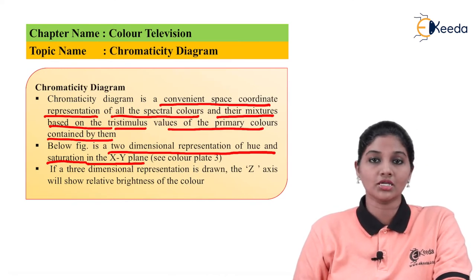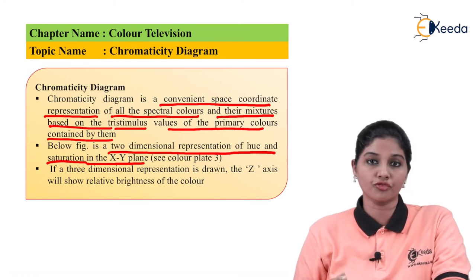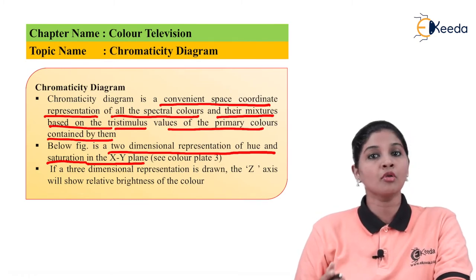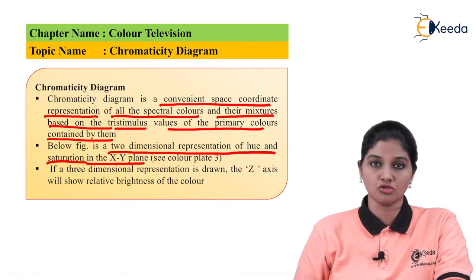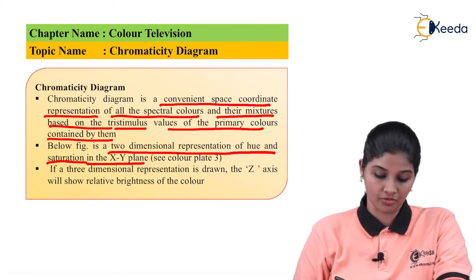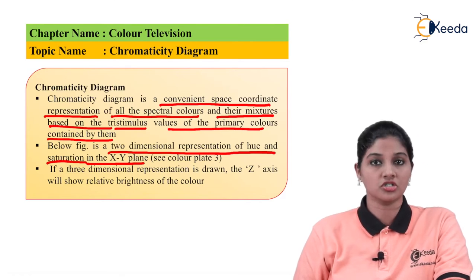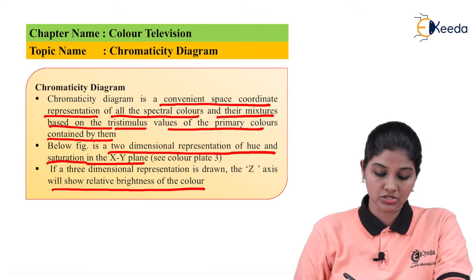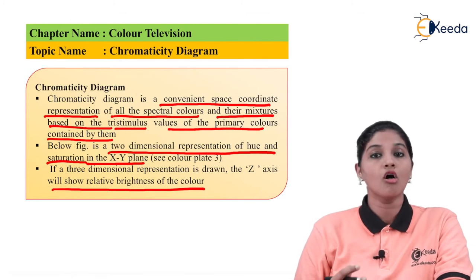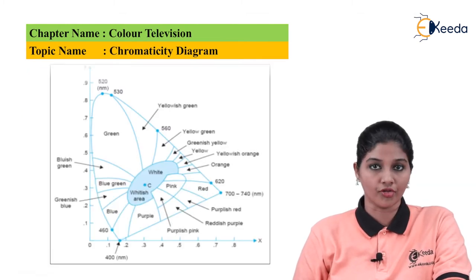Chromaticity — also called chroma — is nothing but a combination of hue and saturation. So when we plot a chromaticity diagram, it consists of these two parameters: hue and saturation. When we consider the three-dimensional structure, we require a Z-axis, which represents the brightness or luminance of the color.